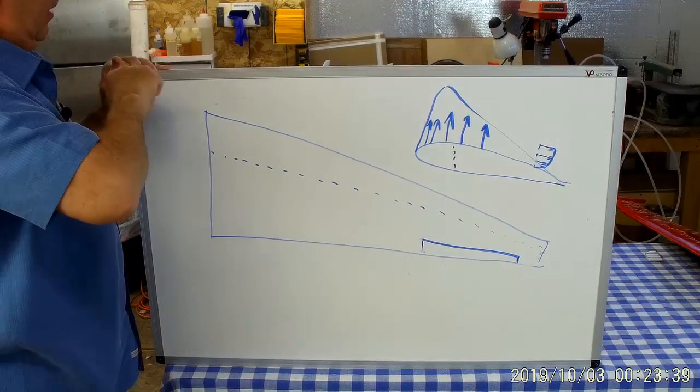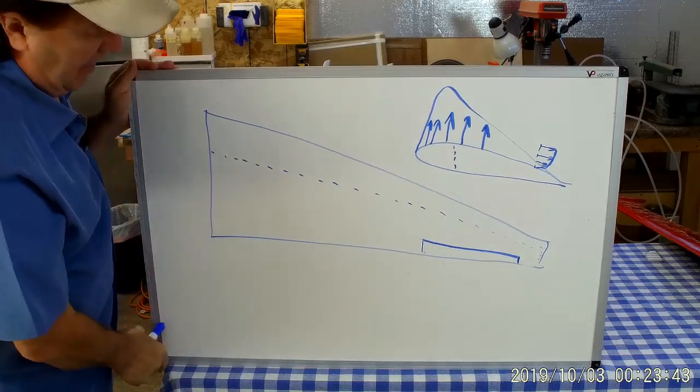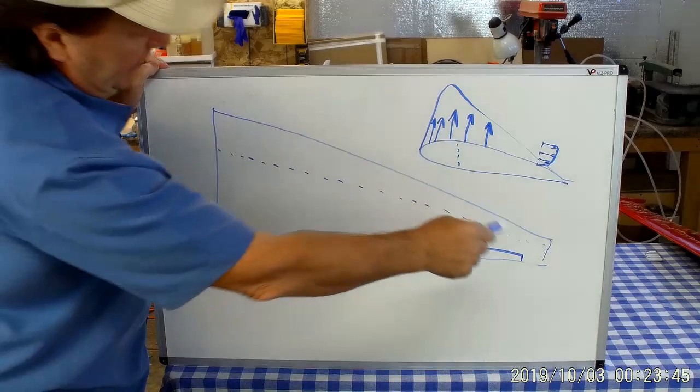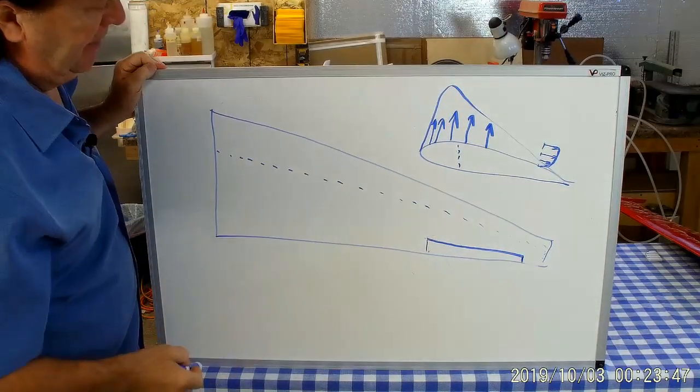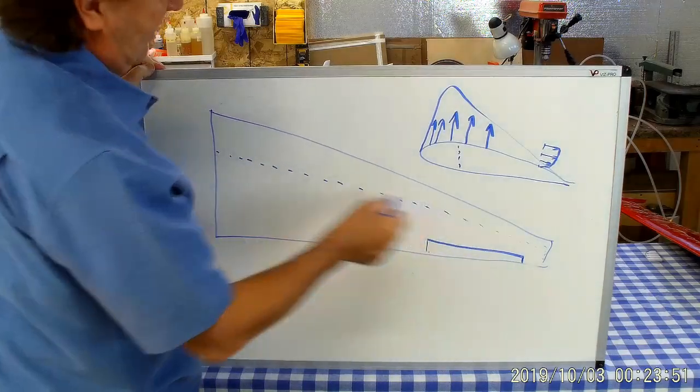Okay, here we are with our whiteboard. On here I've drawn a very simple half of a wing of a flying wing. It's got a little elevon on here and a dash line showing about where the quarter chord is.